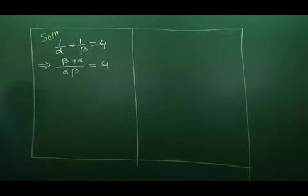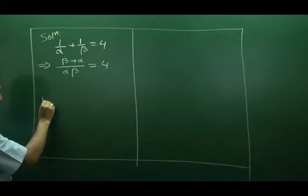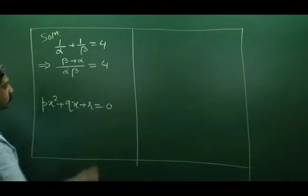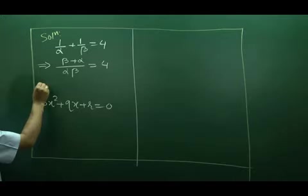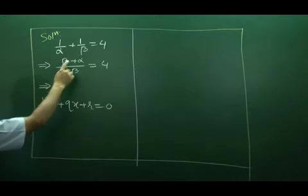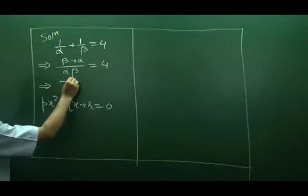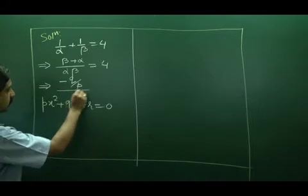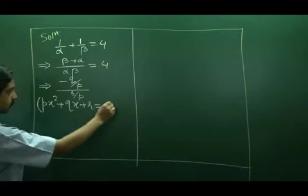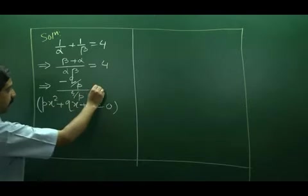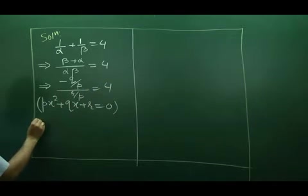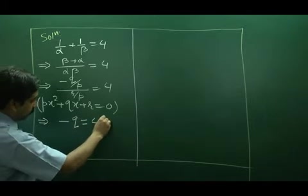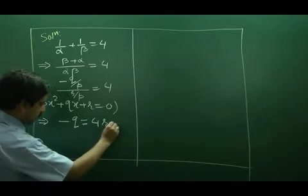Now, we know in the quadratic equation Px square plus Qx plus R is equal to 0, sum of roots is minus Q by P while product of roots is R by P. It means from there we get the information minus Q is equal to 4R. This is our first information.